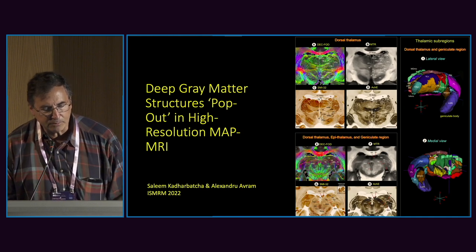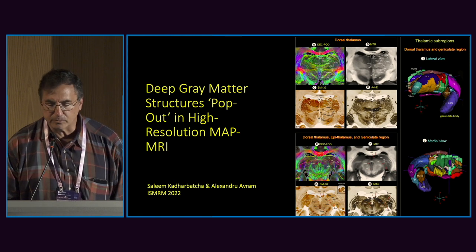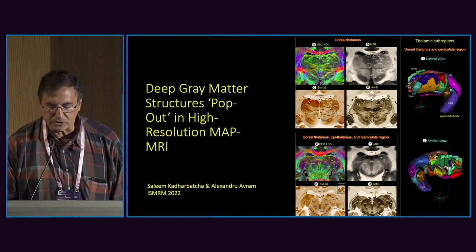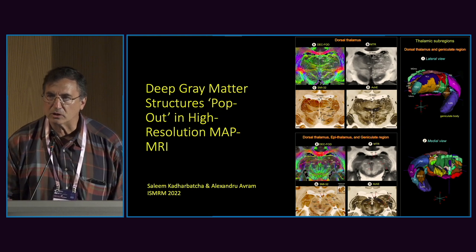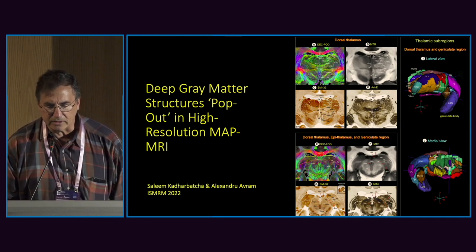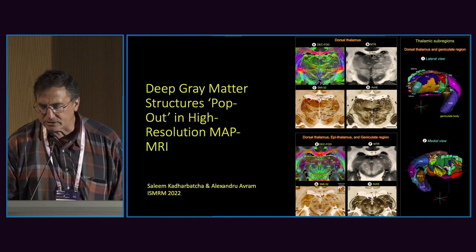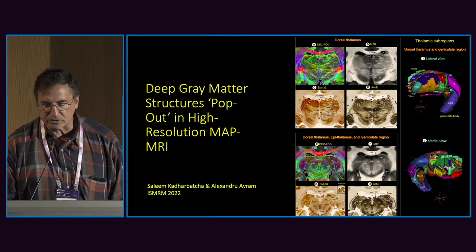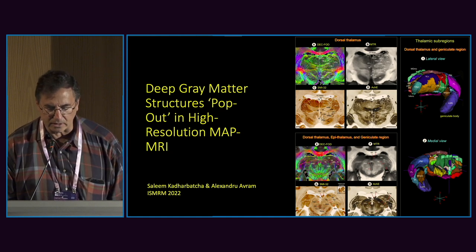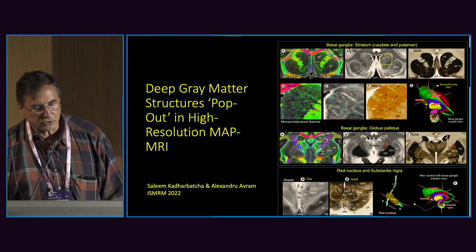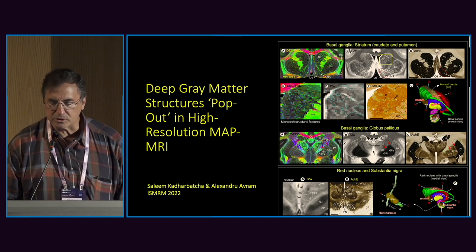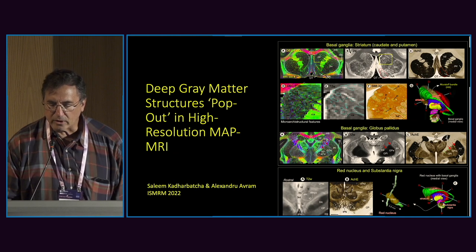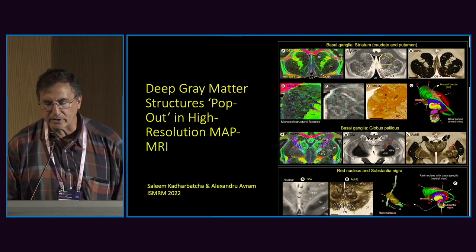Deep gray matter structures also pop out in these high-resolution MAP MRI data. The DEC-FOD maps show tremendous delineation of deep gray matter structures, whereas magnetization transfer MT is not very eloquent in identifying those areas. Deep gray matter structures pop out in other areas of the brain as well — the striatum, globus pallidus, and substantia nigra — where some of these structures really haven't been discernible with MRI previously.